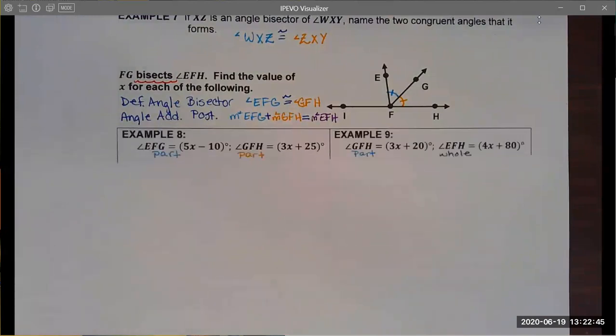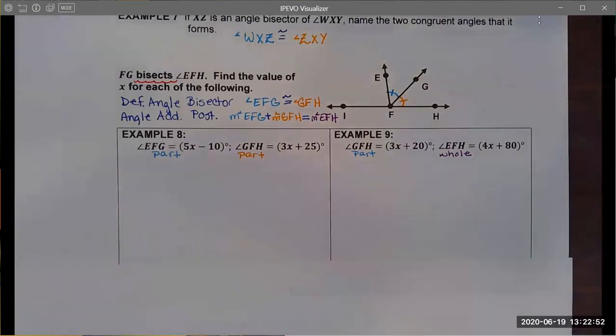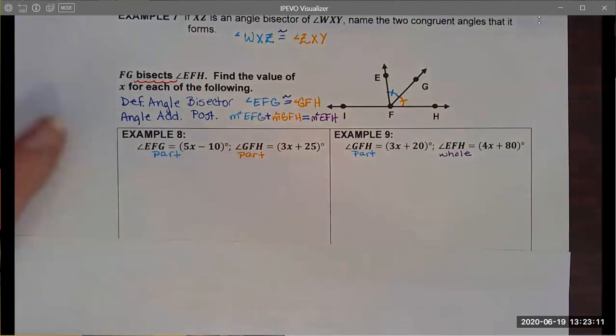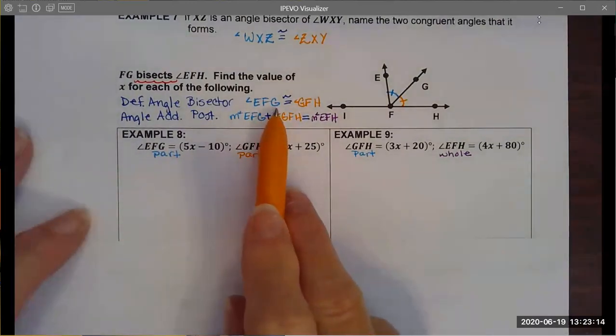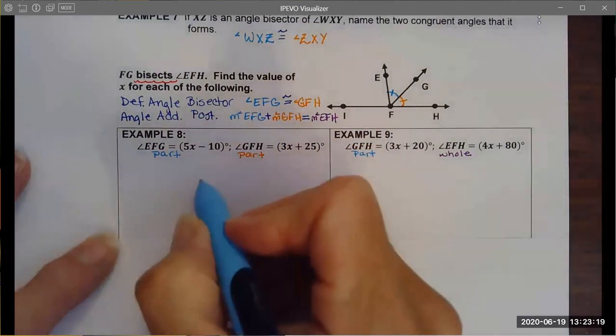In this particular case it would be the blue angle plus the orange angle equals the large angle EFH. So what do some problems look like? Well in example eight I notice that I'm given the blue angle EFG and I'm also given the orange angle GFH. So in this case I've got two parts of an angle. I don't have the whole thing so I'm not going to use the angle addition postulate. Instead I'm going to use the definition of an angle bisector and I'm going to recognize that these two angles are going to be congruent.